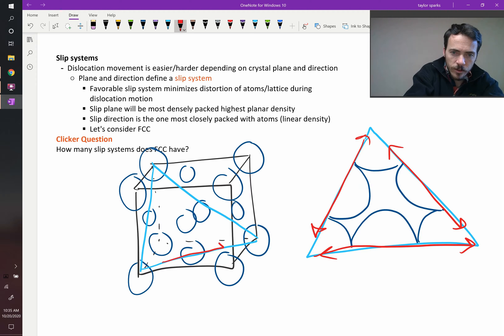If a cube has six faces and there are two diagonals per face, then there is two times six, 12. The FCC crystal would have 12 slip systems.